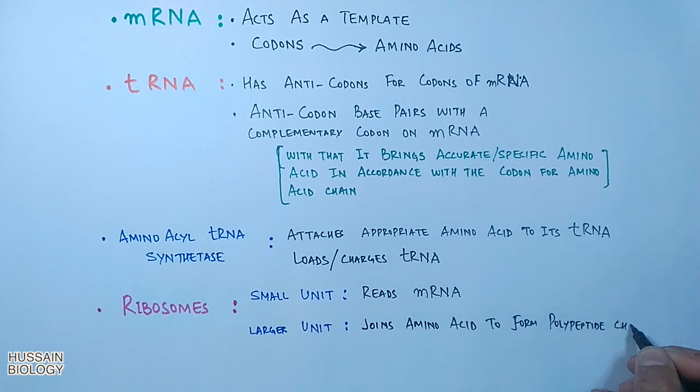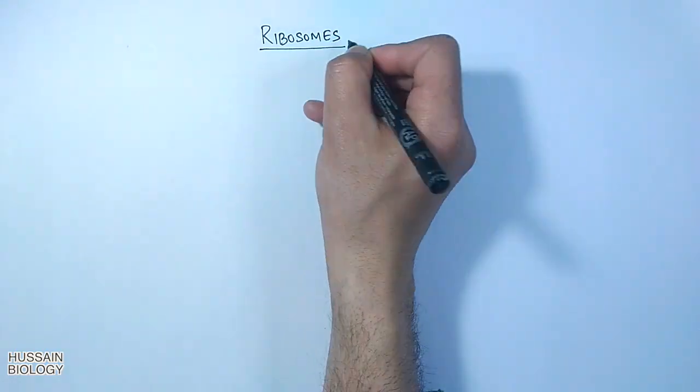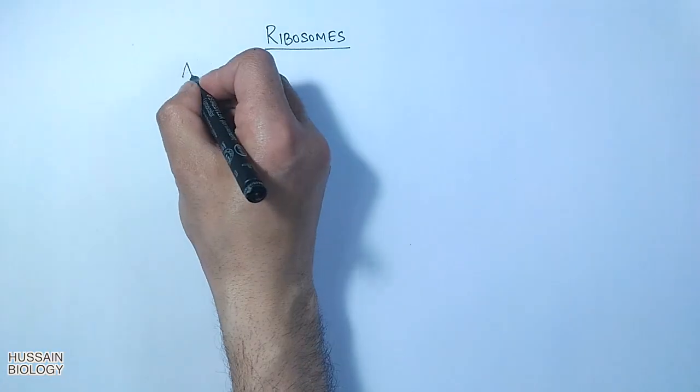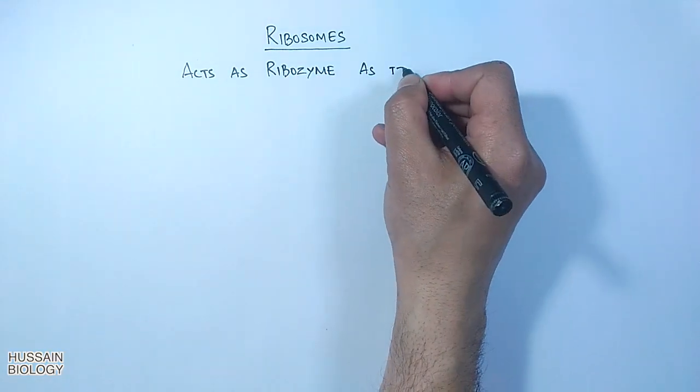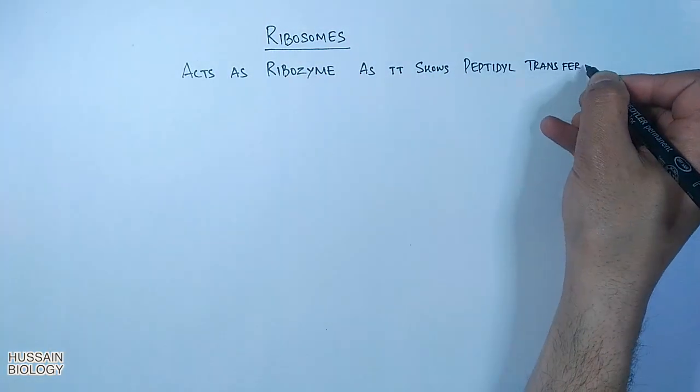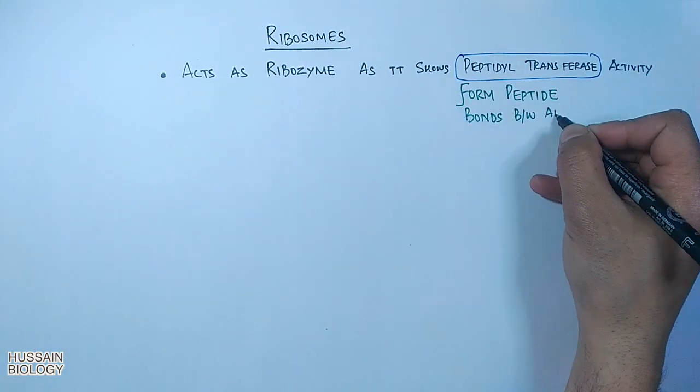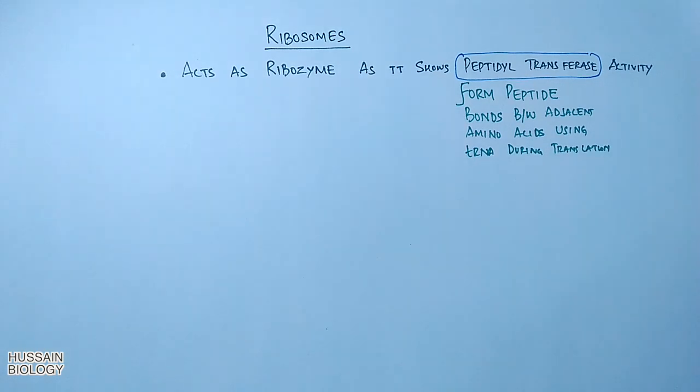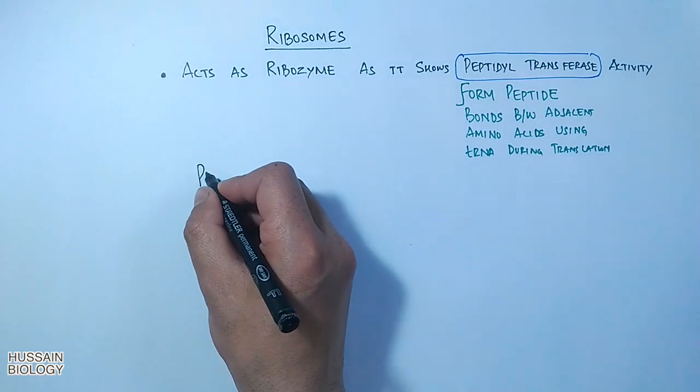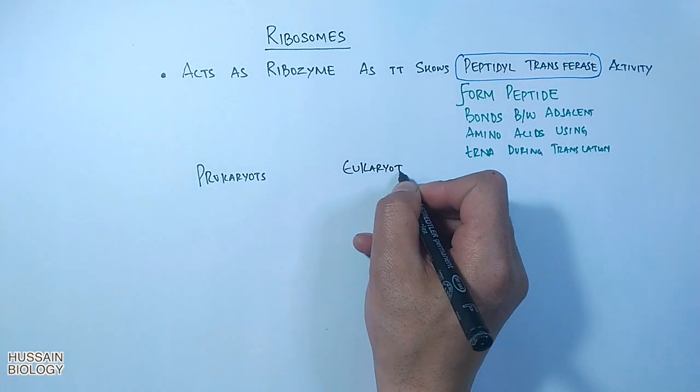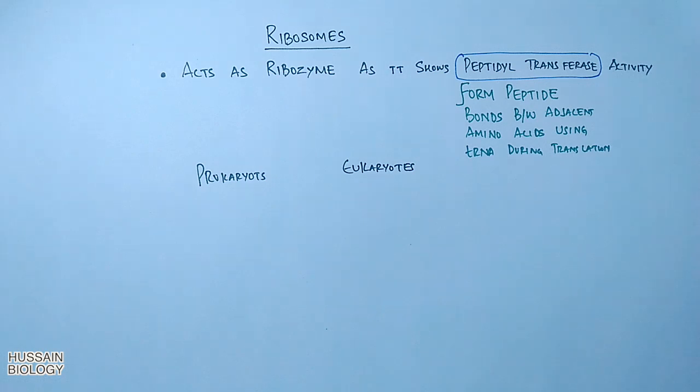It is a small and larger unit. The small unit of ribosome reads mRNA, while the larger unit joins amino acids to form the polypeptide chain. Looking at the ribosomes, we see ribosomes act as ribozyme because they show peptidyl transferase activity. This transferase enzyme catalyzes the formation of peptide bonds between two amino acids in the growing chain.